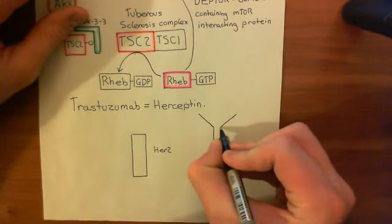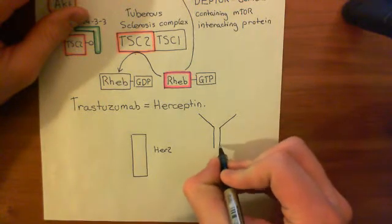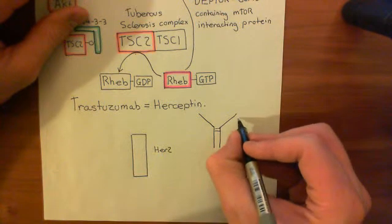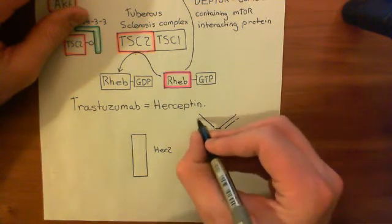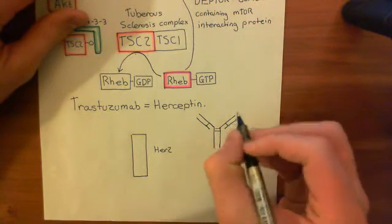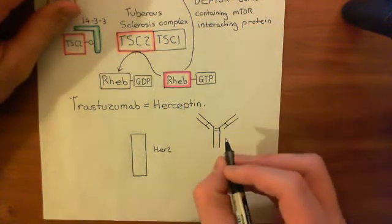Okay, so here's a heavy chain, here's the second heavy chain, and the two heavy chains are linked by disulfide bonds, and then two light chains, which are again linked to the heavy chains by disulfide bonds. So this is the structure of an antibody.